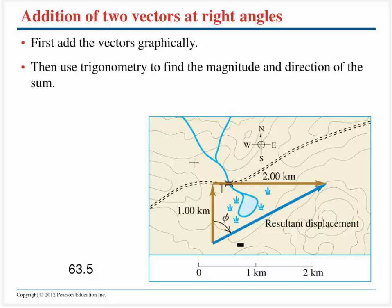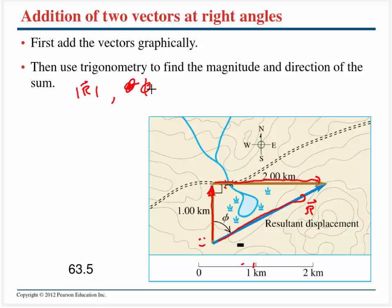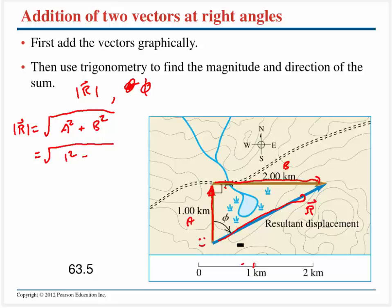Let's look at a simple example. Suppose I walk due north for one kilometer, then due east for two kilometers. How far am I from my starting point, and what angle does my resultant vector r make? This is a right triangle, so the Pythagorean theorem gives the magnitude of r as the square root of 1² + 2² = √5 ≈ 2.23 kilometers. For the angle φ, using SOH-CAH-TOA, tan φ = opposite/adjacent = 2/1, so φ = arctan(2) ≈ 63.5 degrees.